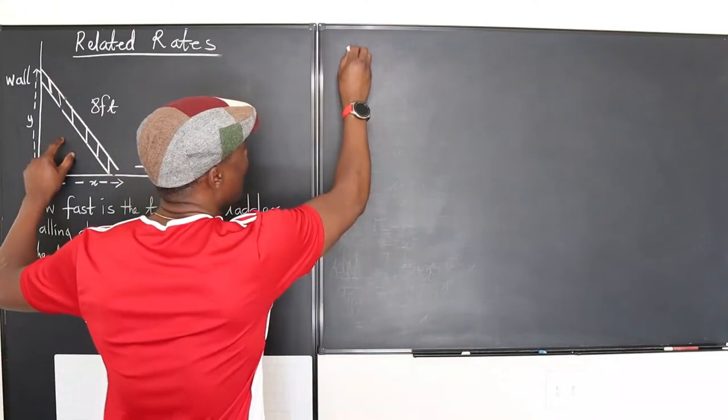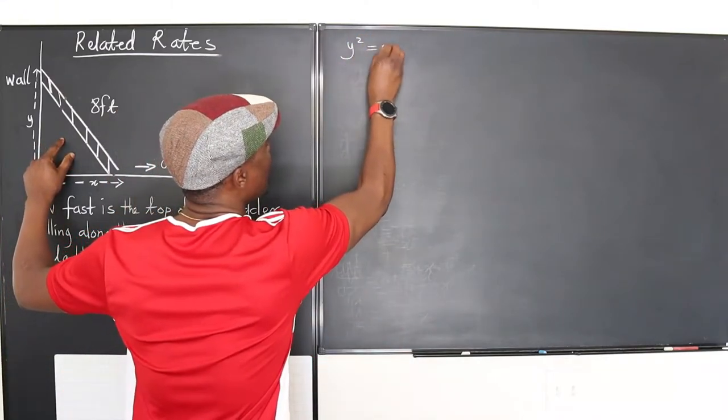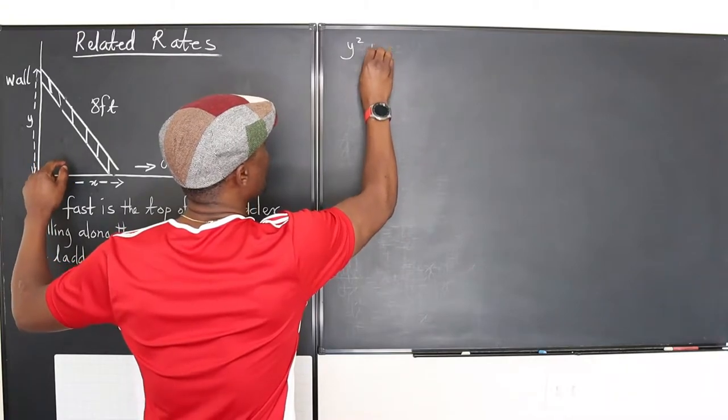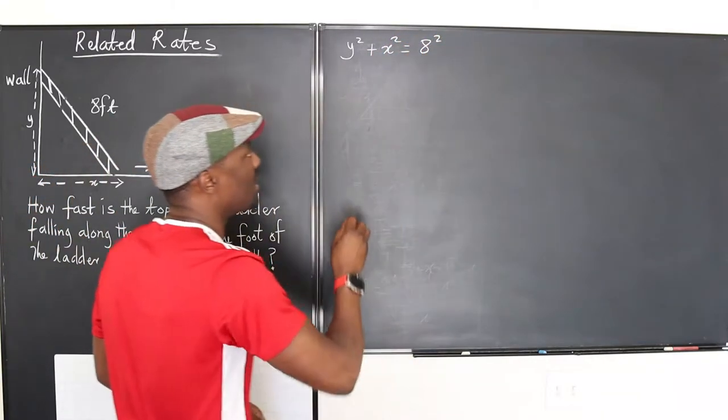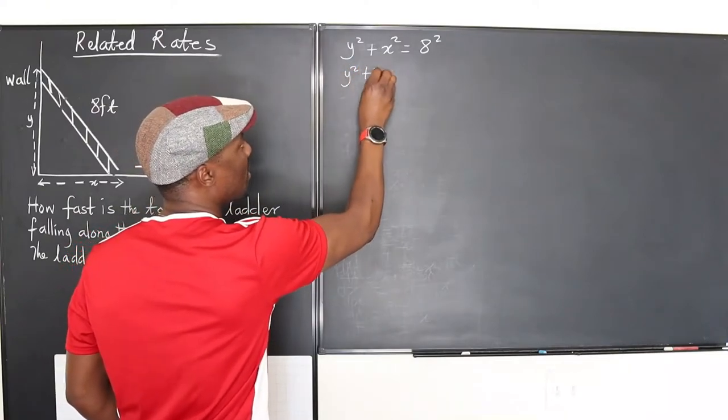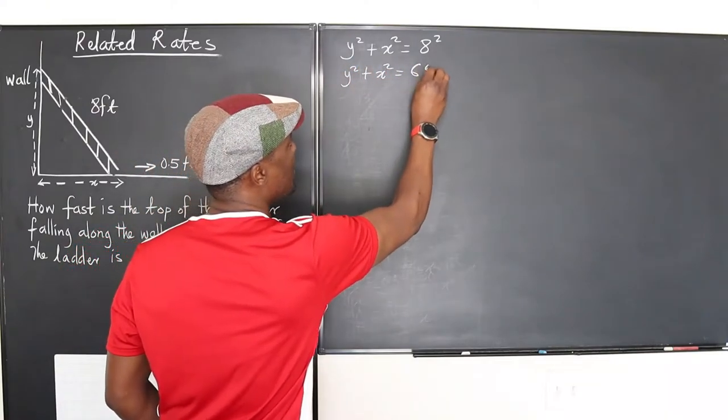Pythagoras's rule or what you call the Pythagorean theorem will help us find the relationship. Let's establish that. We know from this right triangle that y squared plus x squared will be equal to 8 squared, so we can say y² + x² = 64.